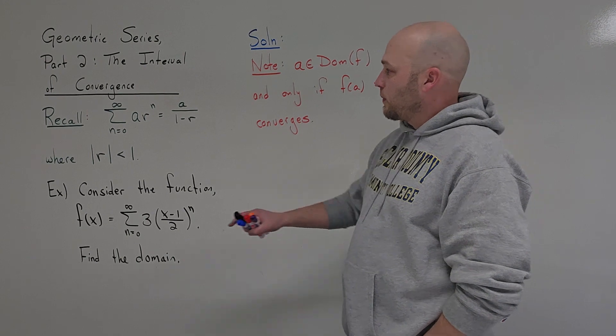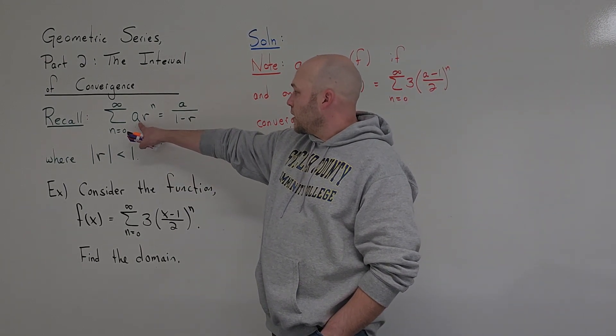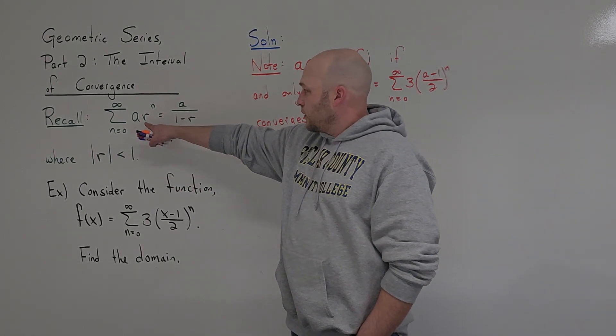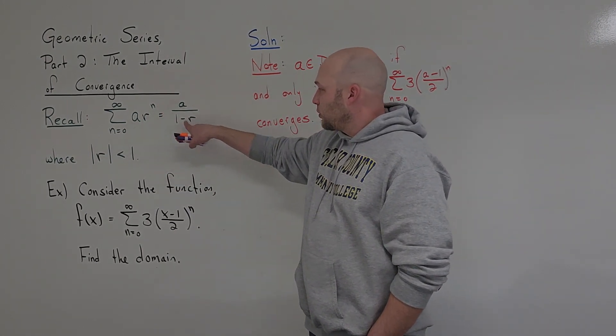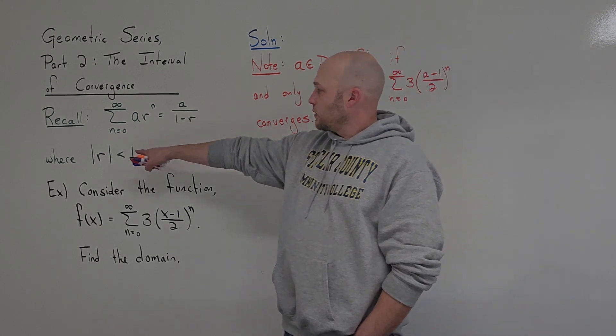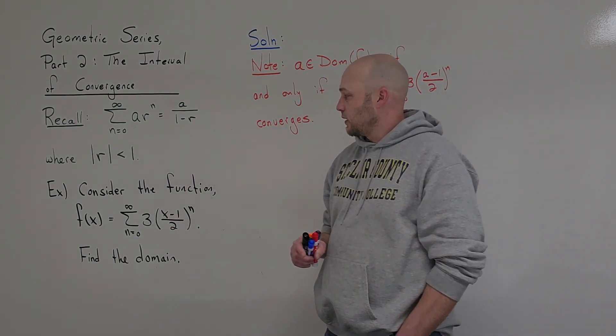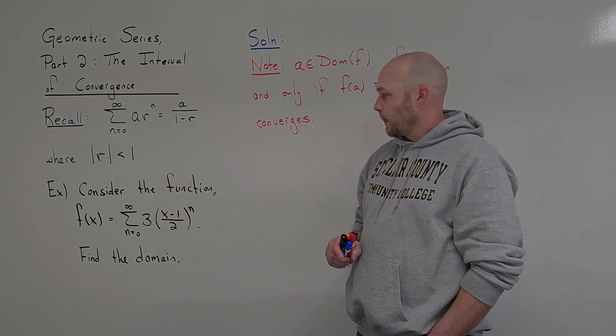First and foremost, remember that for a geometric series, this series is equal to a over 1 minus r, as long as the magnitude of r — the absolute value of r — is less than 1.